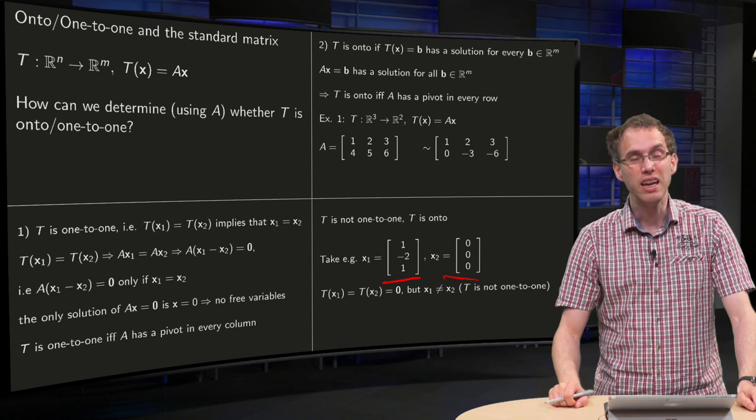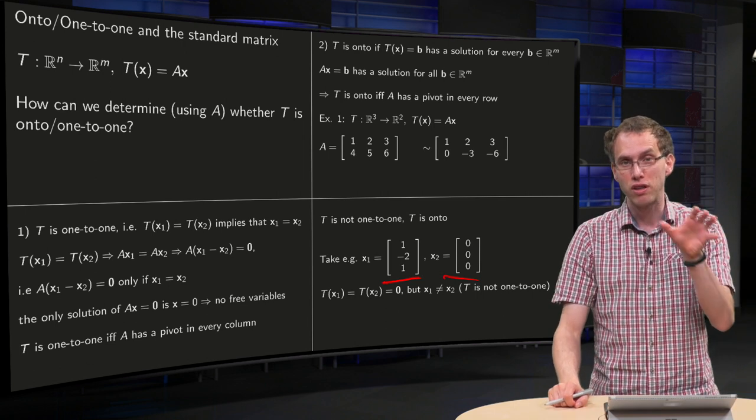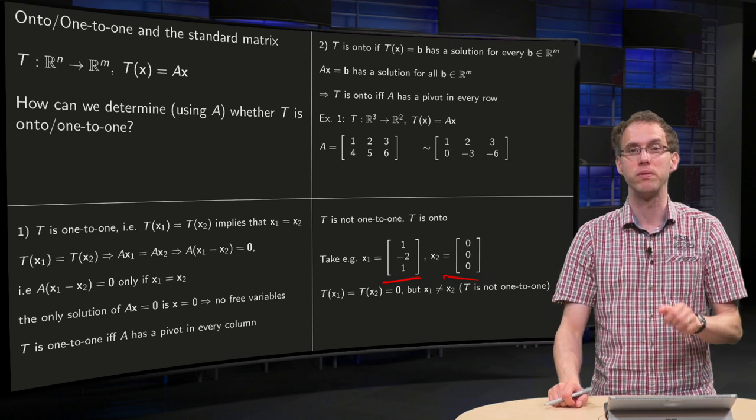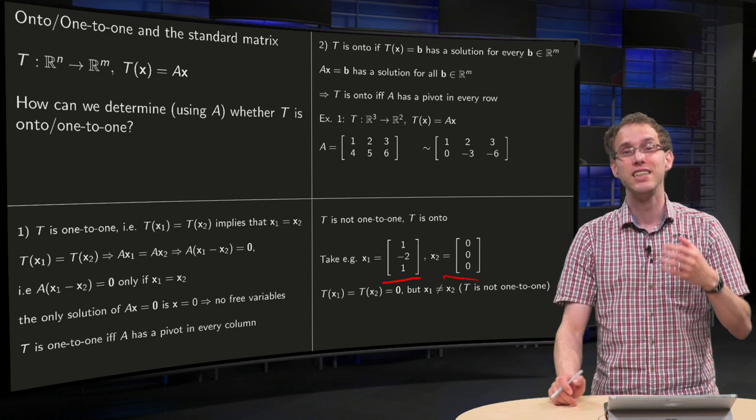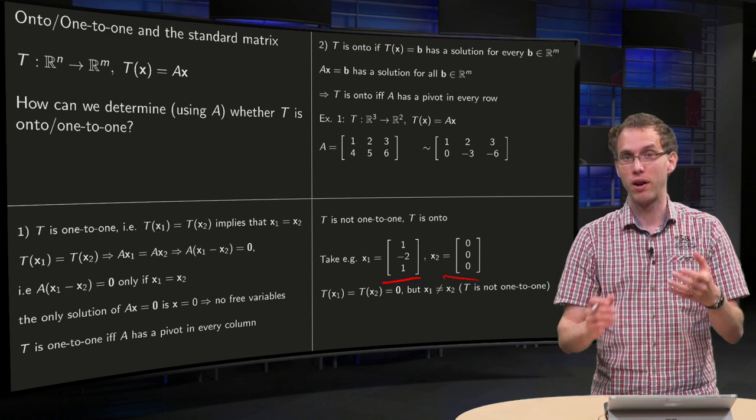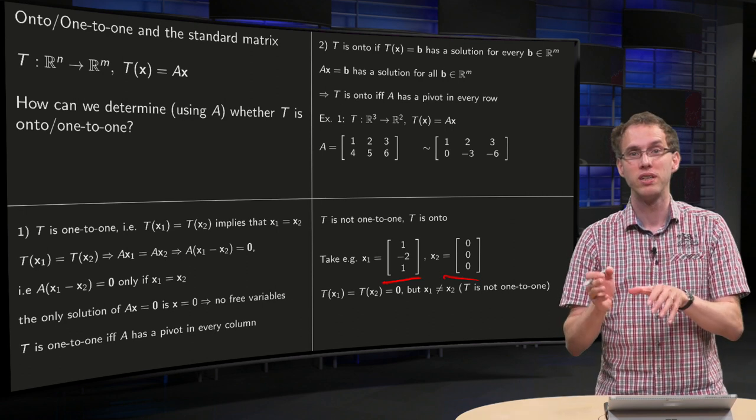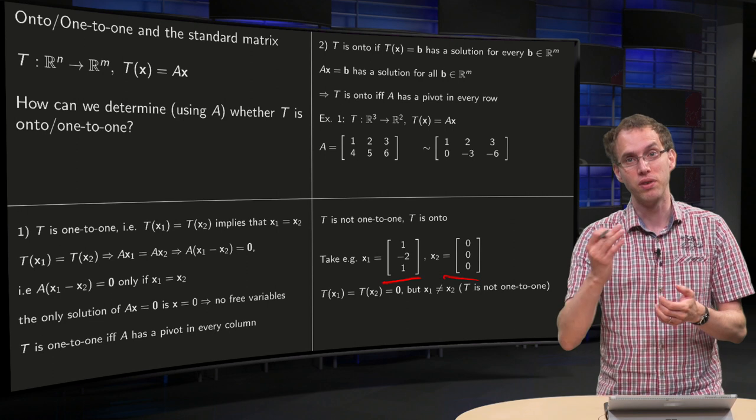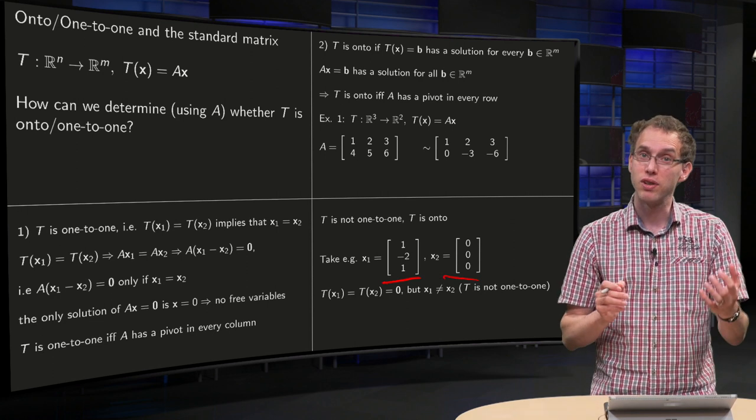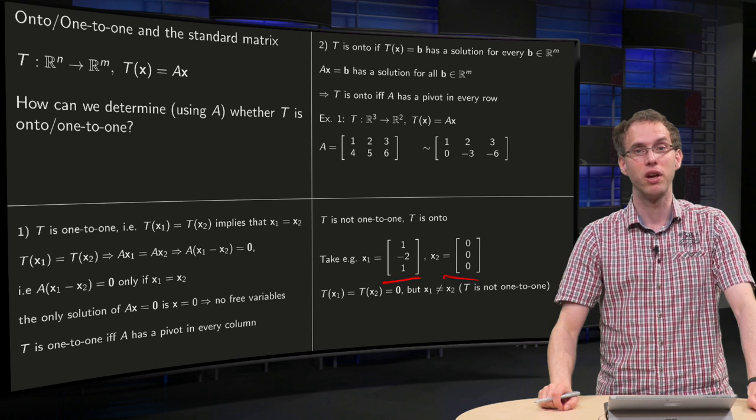So you see that even though the notions of transformations being onto and one-to-one are quite difficult and abstract, checking whether transformations are one-to-one or not, or onto or not, in the case of linear transformation where you have a standard matrix, is actually quite easy because the pivots will tell you the answer.